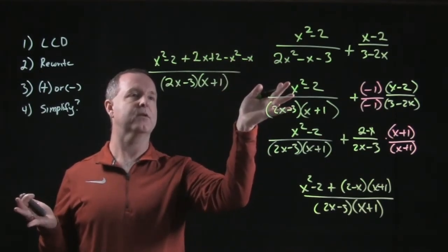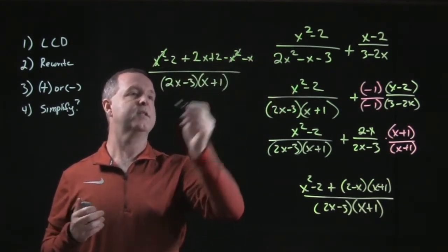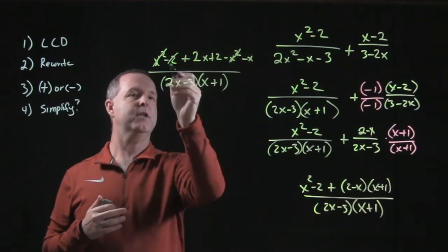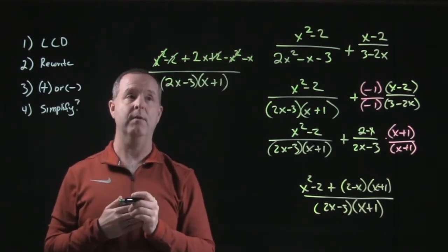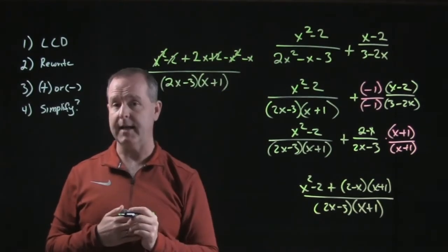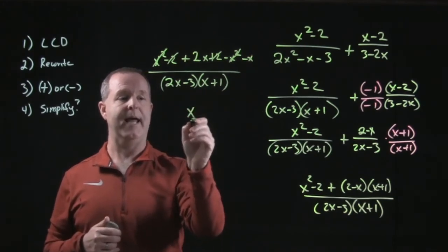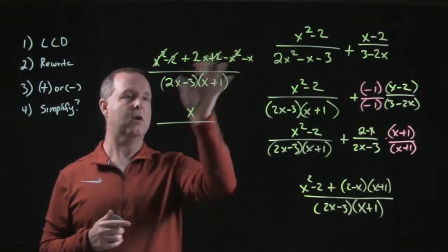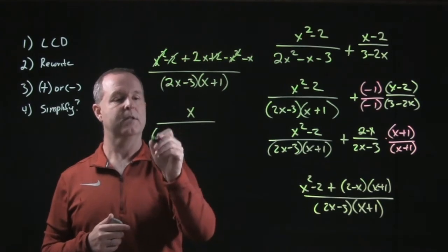x² and negative x² cancel out or zero out. I have negative 2 and positive 2—those zero out. 2x minus x becomes just x. There's no common factors on the bottom with that, so my denominator remains (2x - 3)(x + 1).